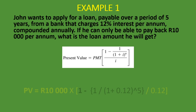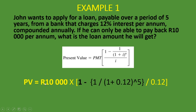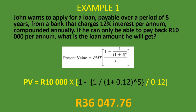So the calculation is: 10,000 rand times 1 minus 1 divided by 1 plus 0.12 to the power of 5, all divided by 0.12. Multiplying that full answer by 10,000 gives you the present value of the ordinary annuity, which is 36,047 rand and 76 cents. If you punch it into your calculator correctly, you should get the same answer. I hope it's making sense using this formula.